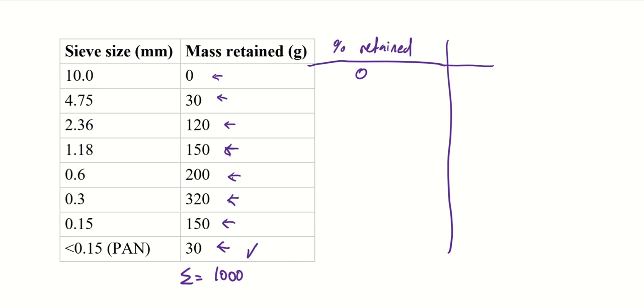Okay, so going back to our column percentage retained, to calculate, let's do an example for the 4.75 sieve size. The way you do it is 30 divided by 1000, so that's 1000 from here, that's the summation, multiplied by a hundred to get percentage because remember this is in percentage. And that should give you 3. So that's 3%. If we do the same for the 120, so it's 120 divided by 1000 multiplied by a hundred. That's 12. 150 divided by 1000 multiplied by a hundred. That's 15. And then you just do the same for each row that you see in front of you.